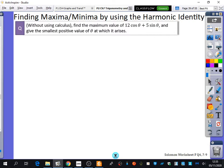So this question says, find the maximum value of 12 cos theta plus 5 sin theta and give the smallest positive value of theta at which it arises. It doesn't tell you to use the harmonic identity, but obviously we know it's going to be the harmonic identity because we're doing this topic.